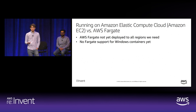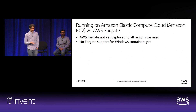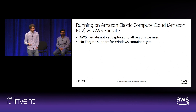Once we decided to use Amazon ECS, we had to choose between EC2 launch type and Fargate. However, Fargate is not yet deployed to all the regions we need and there's no Fargate support for Windows containers, so we went with EC2.